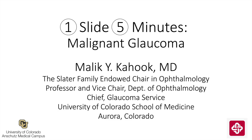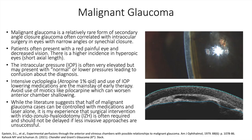This is Malika Hook from the University of Colorado, and the topic today is malignant glaucoma in this edition of One Slide in Five Minutes. Malignant glaucoma is a relatively rare form of secondary angle closure glaucoma, often correlating with intraocular surgery in eyes with narrow angles or synechial closure, although it can occur in open angles and even post non-invasive laser procedures like cyclophotocoagulation and laser iridotomy. Other terms used to describe the disease process include aqueous misdirection and ciliary block glaucoma.